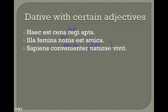So these certain adjectives — when you translate them, you'll realize that you really do need a 'to' or 'for,' and you're going to use the dative for it. And you'll run into a dative that has no other possible use, so it must be the dative with that adjective.